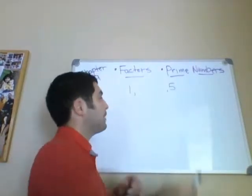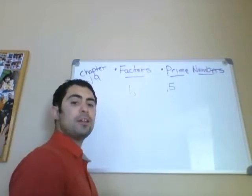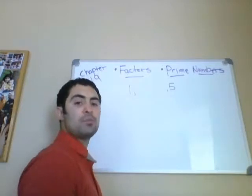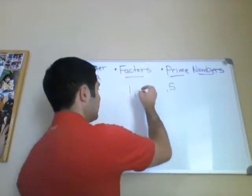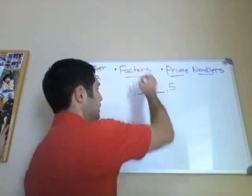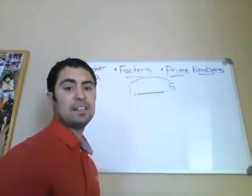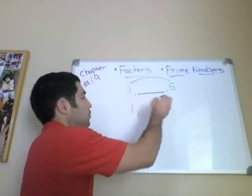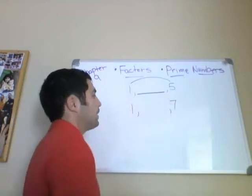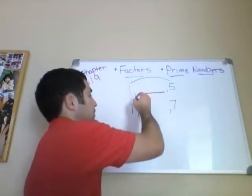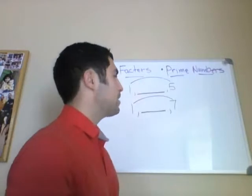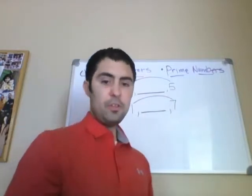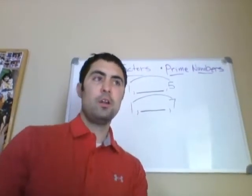Give me all the factors for 5. 5 is what is called a prime number. A prime number does not have any factors other than itself and 1 — that's it. Small rainbow. Here's another prime number: 1 and 7. Give me all the factors — that's it. There aren't any factors that when multiplied together will give you 7 other than 1 and 7.